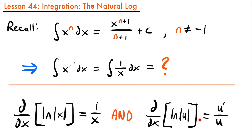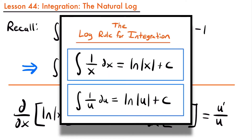If we recall our derivative rules for the natural log function from a previous lesson, we know that the derivative of the natural log of the absolute value of x is equal to 1 divided by x. And the chain rule version: the derivative of the natural log of the absolute value of u is equal to u prime divided by u. This is important because we have a function whose derivative is 1 divided by x. Since differentiation and integration are opposite operations, to find the integral of 1 divided by x, we just ask what function has that derivative — and that is the natural log of the absolute value of x. From this, we get the log rule for integration.